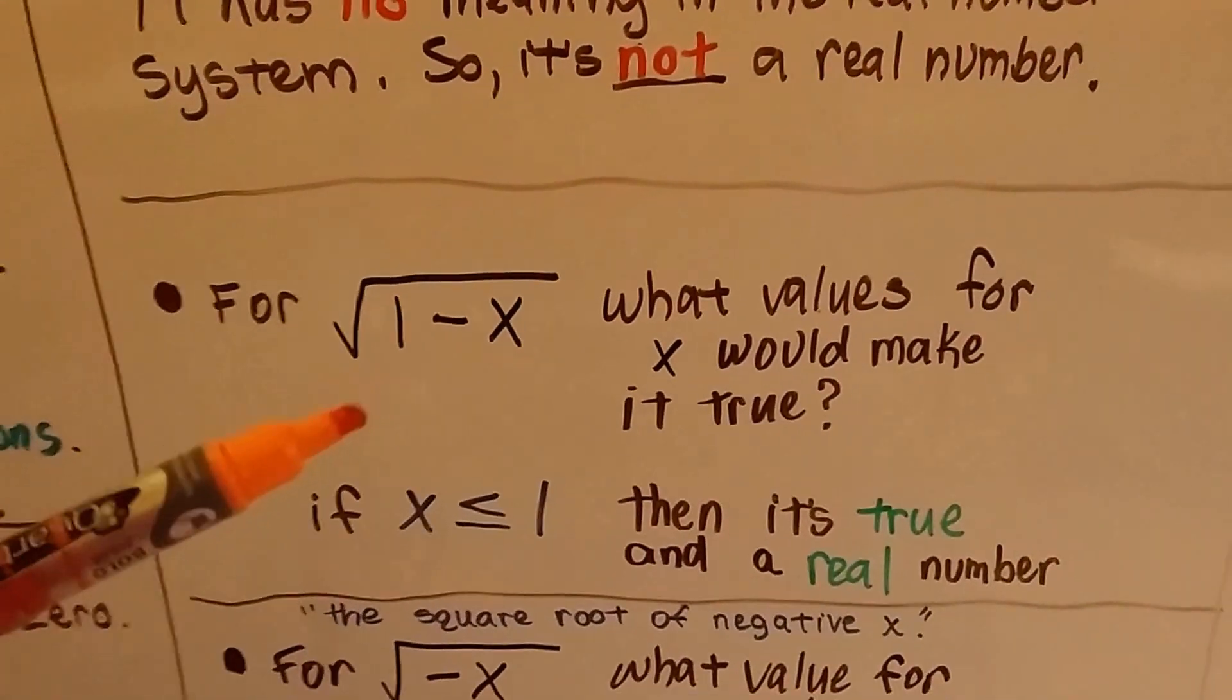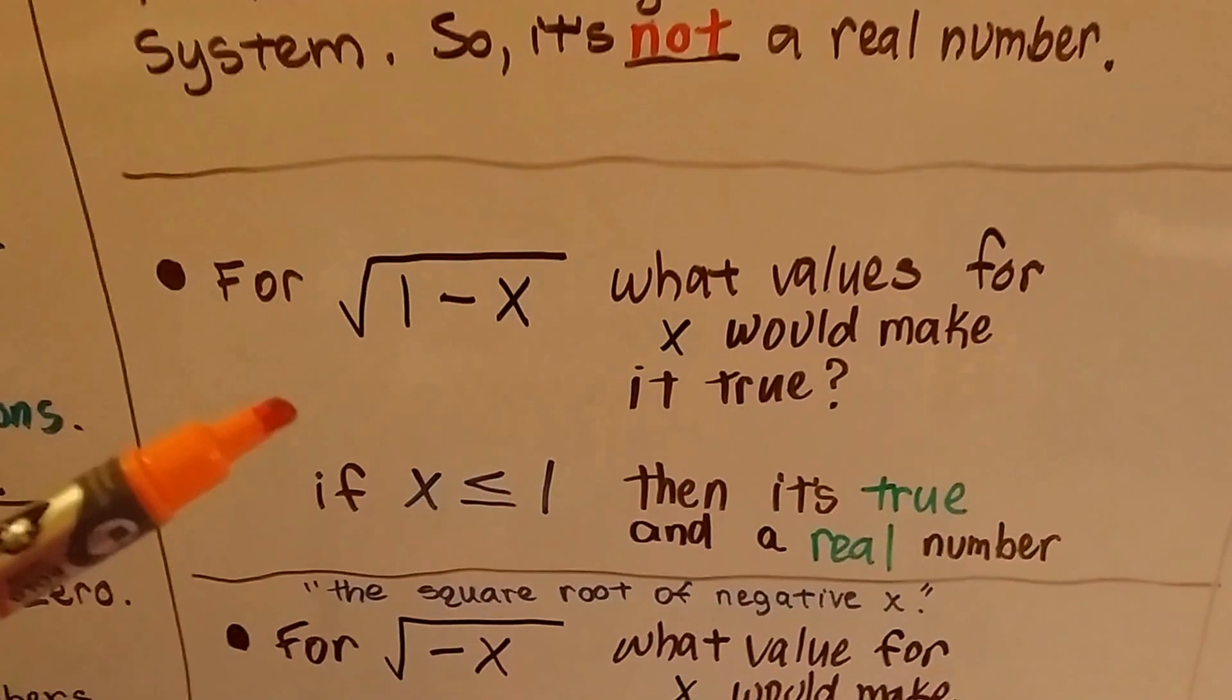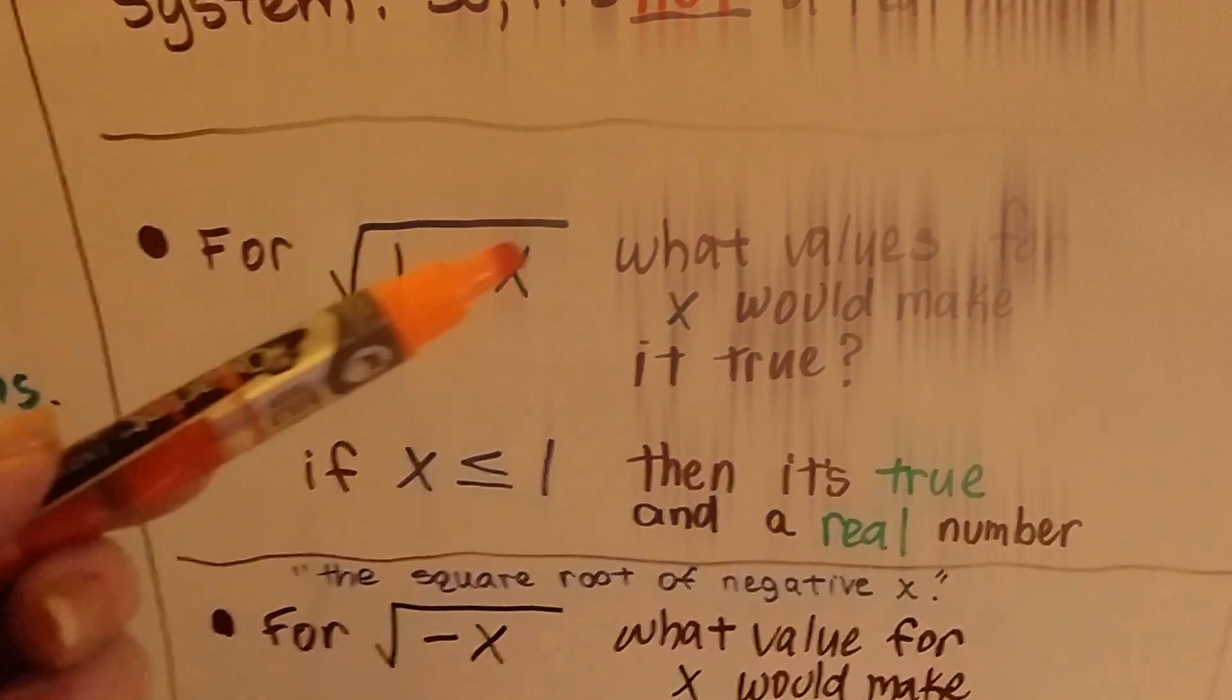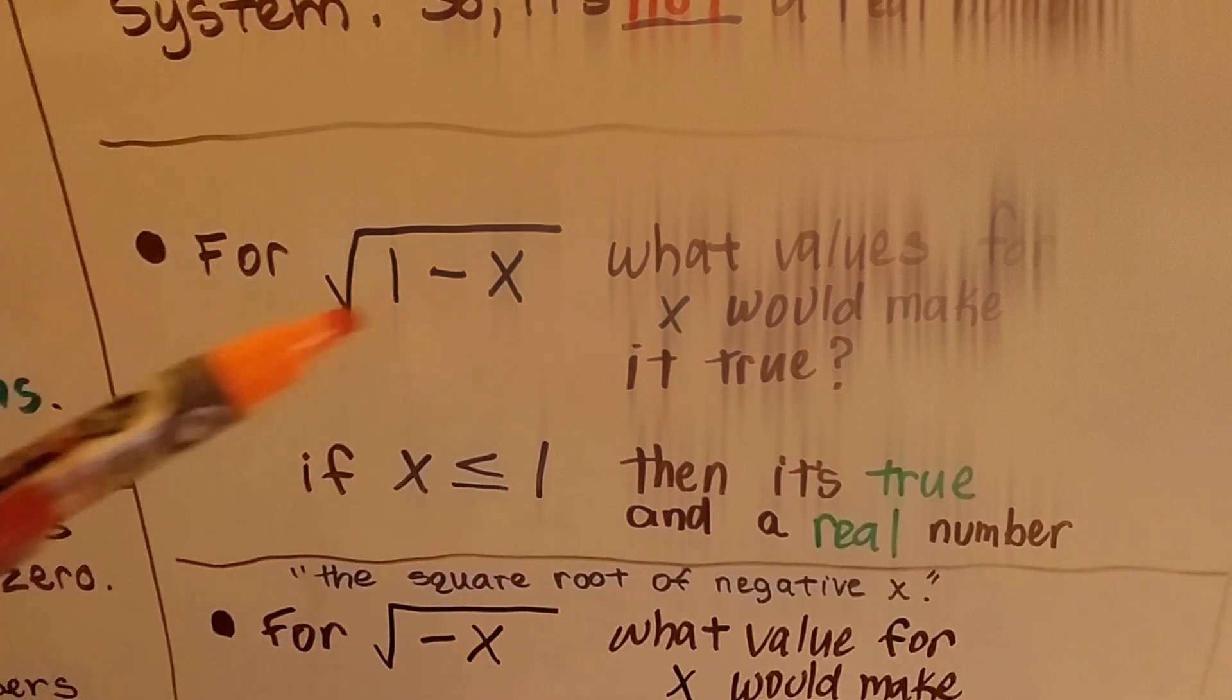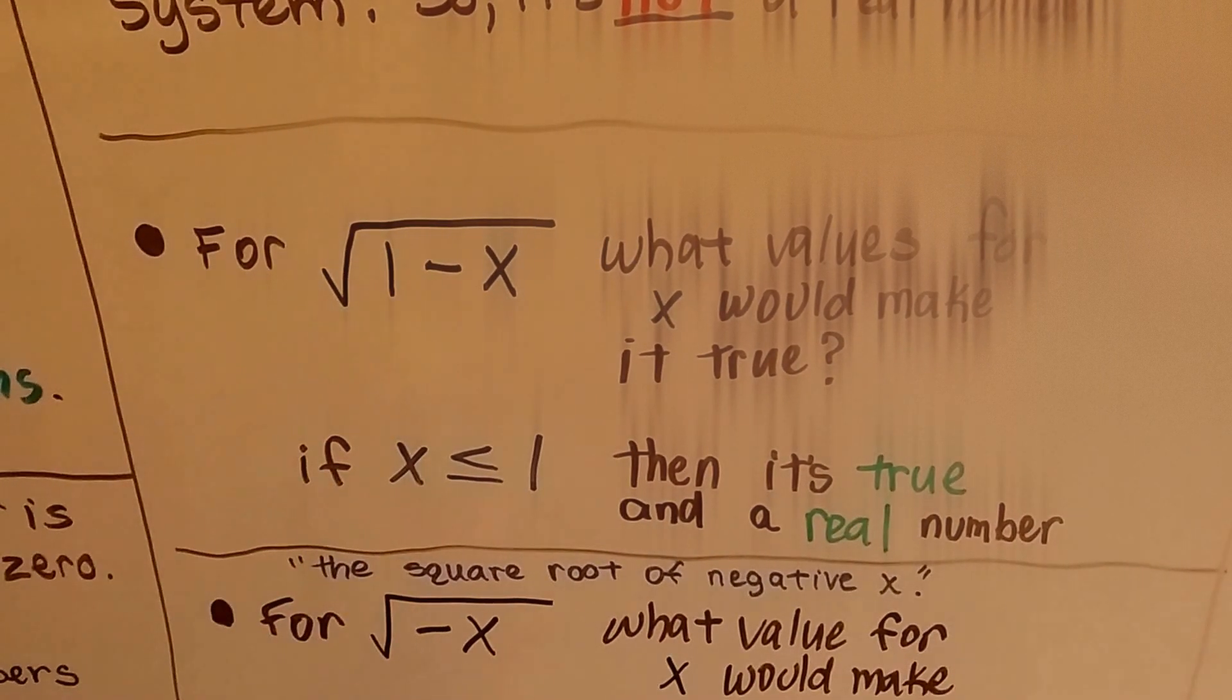For this one, it's the same thing as this. What values would make x true? What values would make this true? What values for x? Well, if x was less than or equal to a 1, it would make this true.